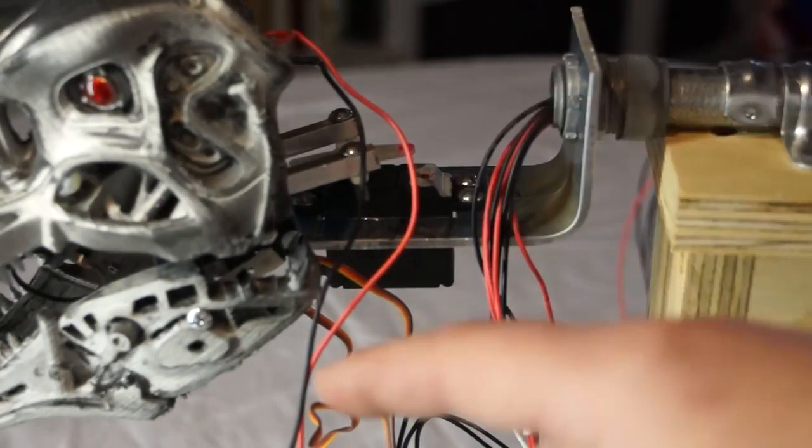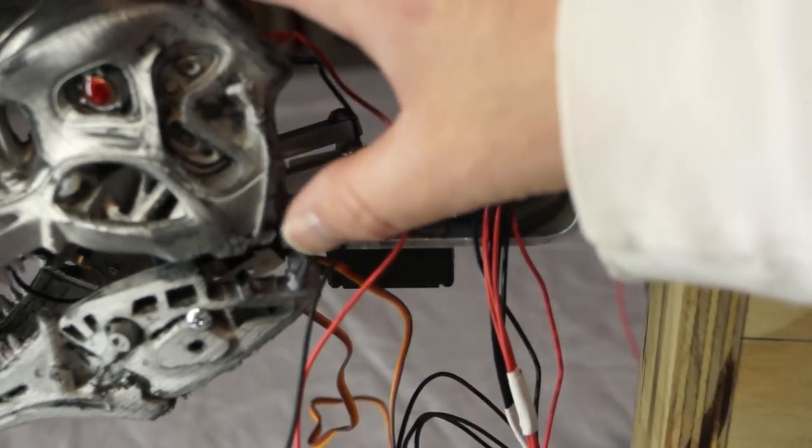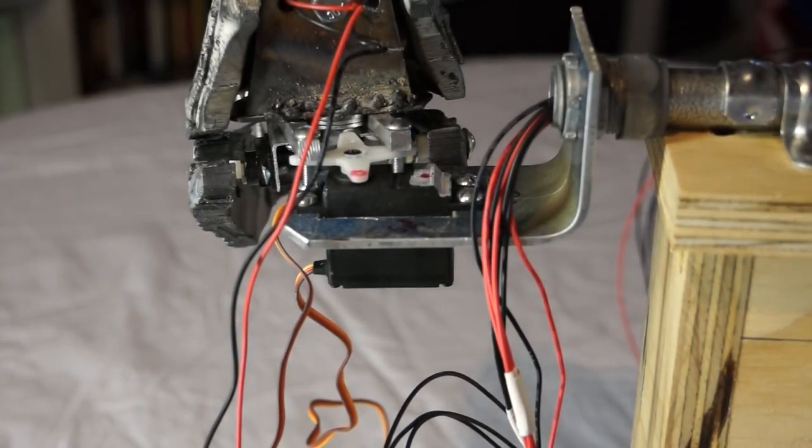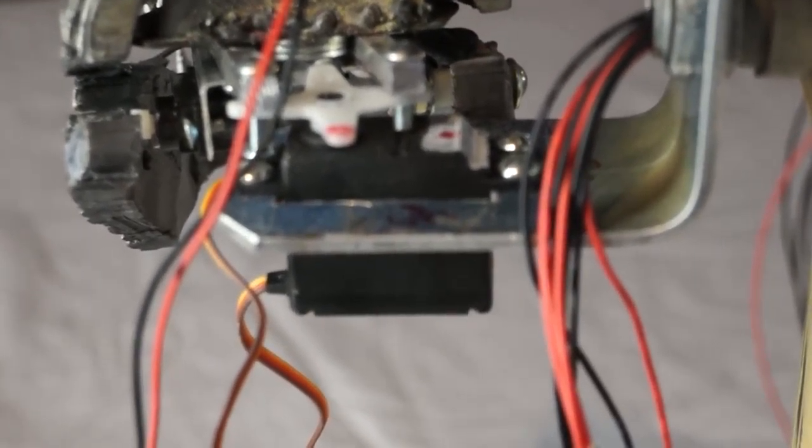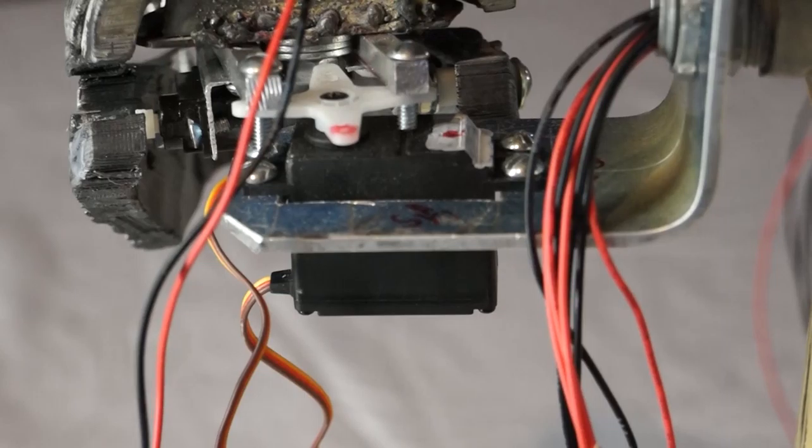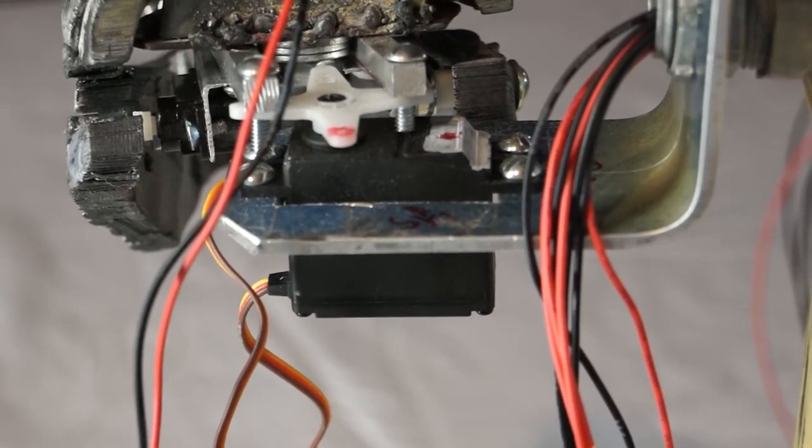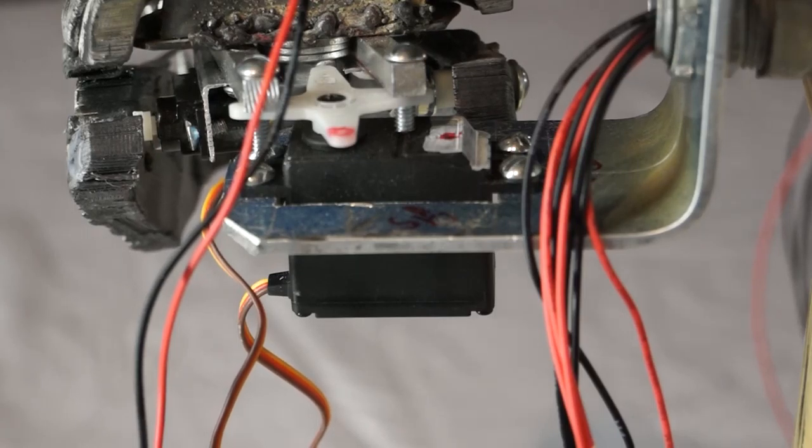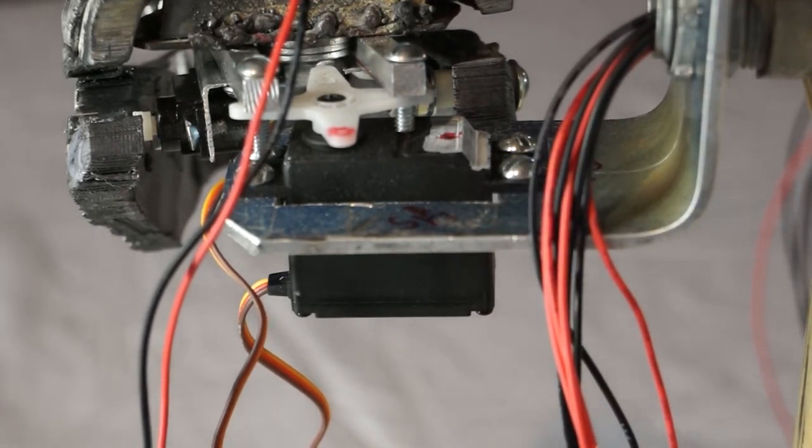Well, Rex is mounted with the plate that we built previously. Her eyes are wired together and run out through what will be the connection to the neck. Additionally, we now have two servo motors. One here in the jaw, you can see right in here.